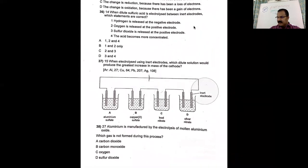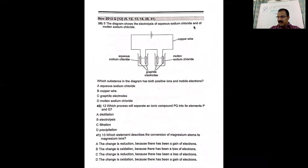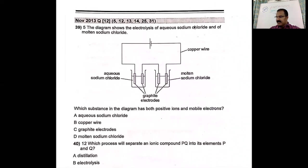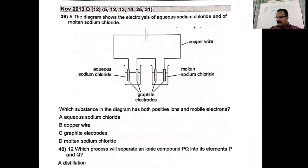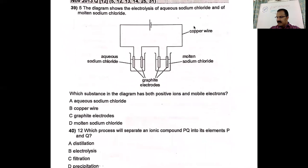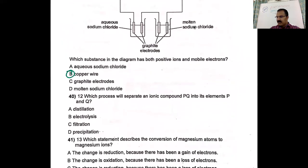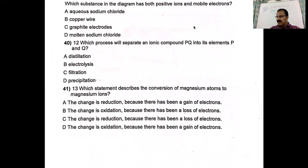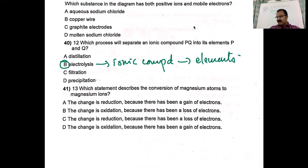The diagram shows electrolysis of aqueous and molten sodium chloride — this question was there again. The answer is copper wire. Which process will separate an ionic compound PQ into its elements P and Q? That's a basic definition of electrolysis — ionic compounds are split into their elements when electricity is passed. So the answer is electrolysis.